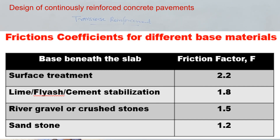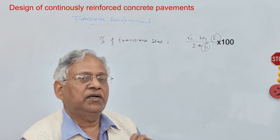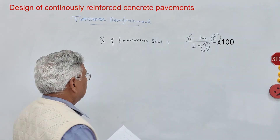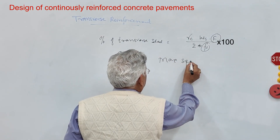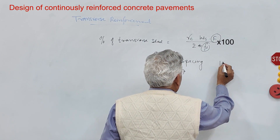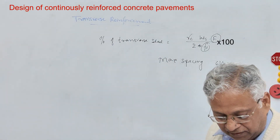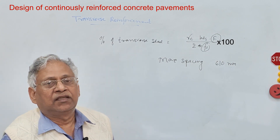The friction factor F depends on the type of material beneath the slab. IRC 118 provides a table of F values: for surface treatment it is 2.2; for lime, asphalt, or cement stabilized layer it is 1.8; for river gravel or crushed stone it is 1.5; for sand it is 1.2; and for natural subgrade it is 0.9. The maximum spacing suggested for transverse reinforcements is 610 mm, and these reinforcements should be kept at least 500 mm away from the transverse construction joint.